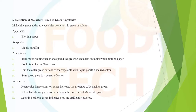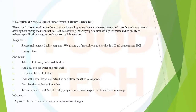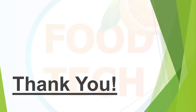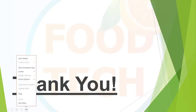Detection of invert sugar in honey — also known as the Fiehe's test. Invert sugar syrups have a higher tendency to develop color and are used as colorants as well as for textural properties. If a pink to cherry red color develops in the honey solution treated with resorcinol reagent and diethyl ether, the presence of invert sugar is confirmed. Please like, subscribe, and share the channel so it can benefit everyone. Thank you.